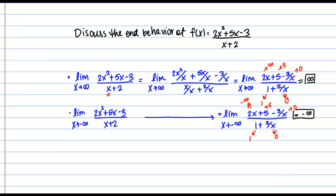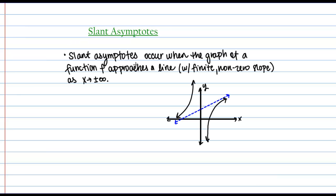By this work, I've determined some information about the end behavior: as x goes to positive infinity, function values go to positive infinity, and as x goes to negative infinity, function values go to negative infinity. But there's a little more information I can gather here. This function actually goes to infinity and negative infinity in a special way called a slant asymptote. Slant asymptotes occur when the graph of a function f approaches a line with finite non-zero slope as x goes to plus or minus infinity.